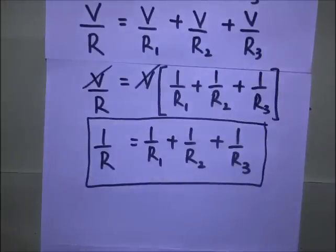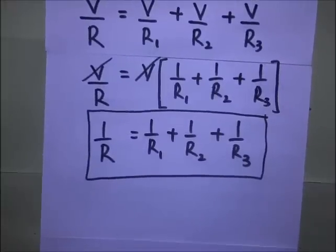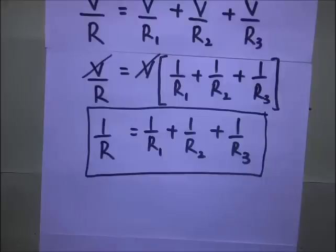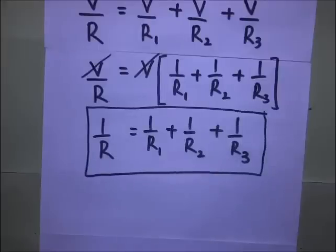So for series we just add the resistances, while for parallel we use the reciprocal formula. For example, if 2 ohms, 4 ohms, and 5 ohms are connected in parallel, the effective resistance works out to approximately 1.05 ohms. You can go ahead and substitute those values into the formula to verify the answer.